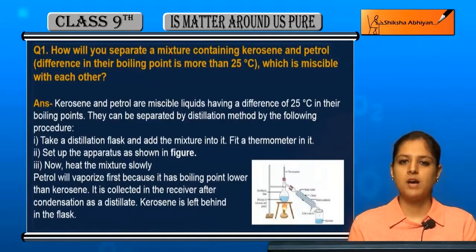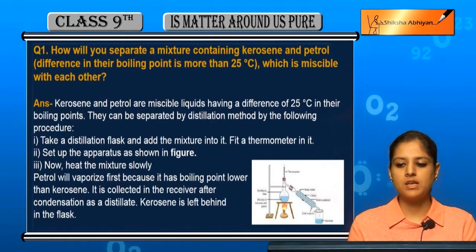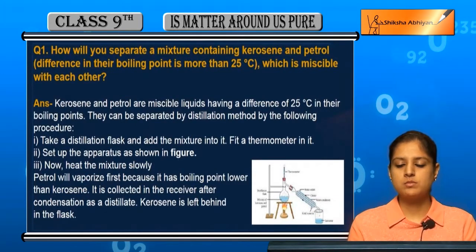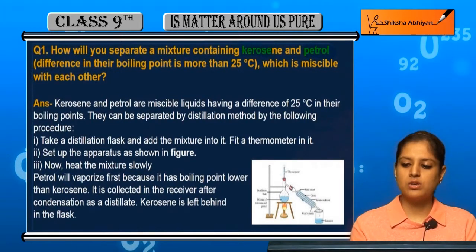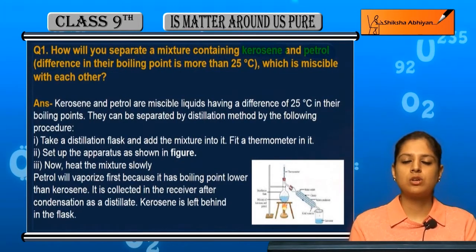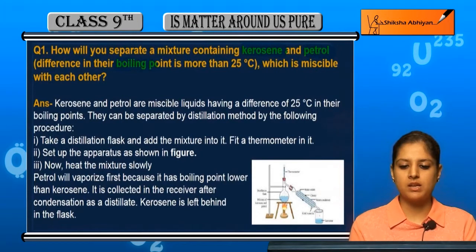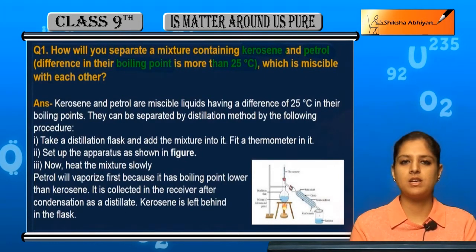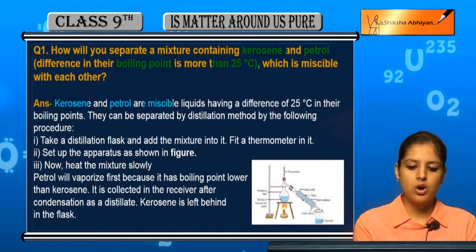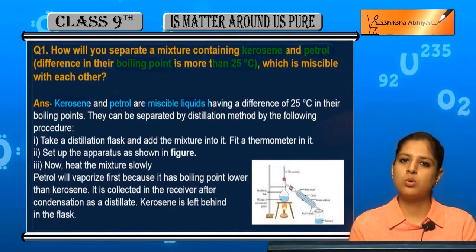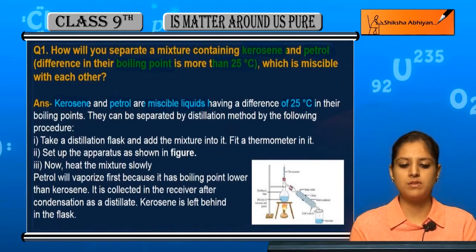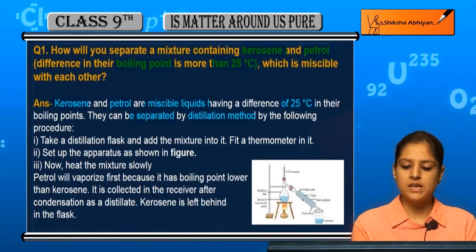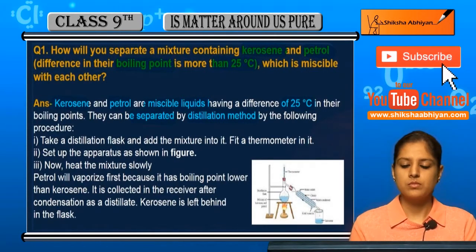The first question is: how will you separate a mixture containing kerosene and petrol, where the difference in their boiling points is more than 25 degrees Celsius, and they are miscible with each other? Since they are miscible liquids with a boiling point difference of more than 25 degrees Celsius, we will separate them using the distillation method.